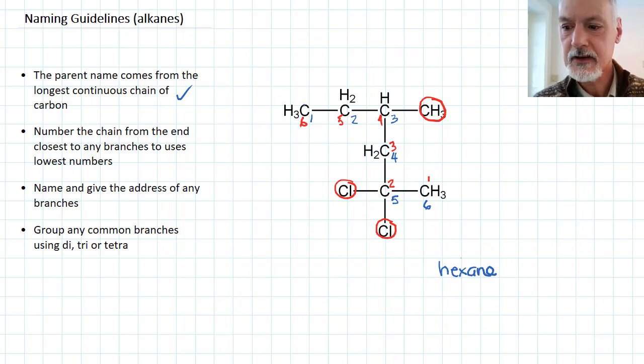Now, the next thing is to identify and give the address of any of the branches. So in this case, I have branches at 2 and 2 and here a branch at 4. I now come up with the names of these branches.